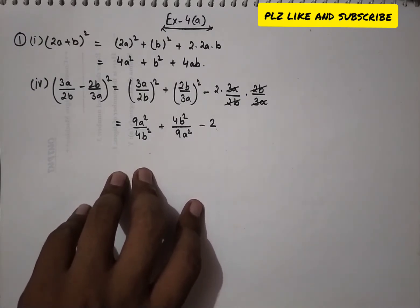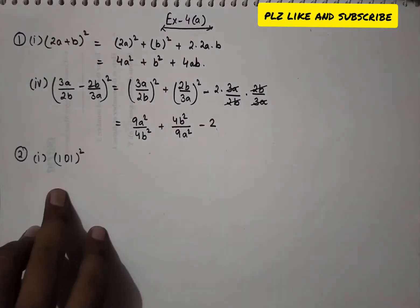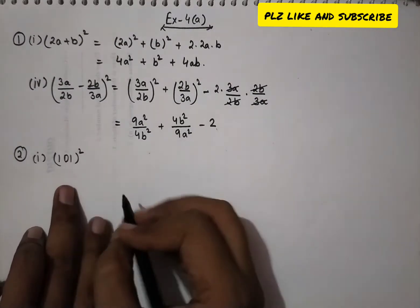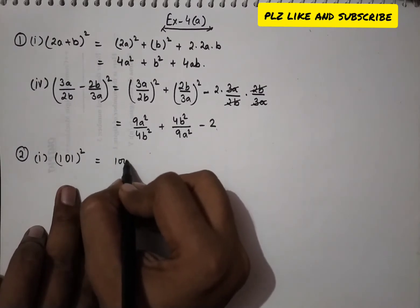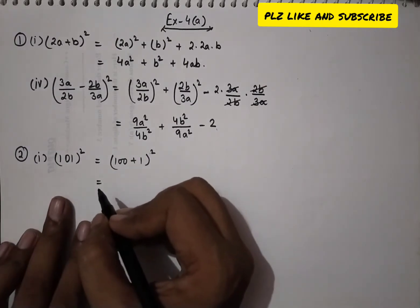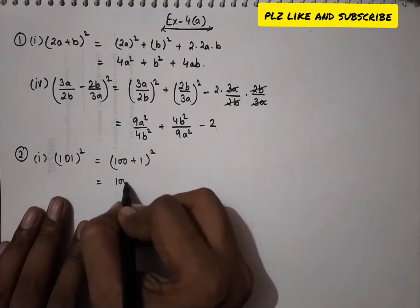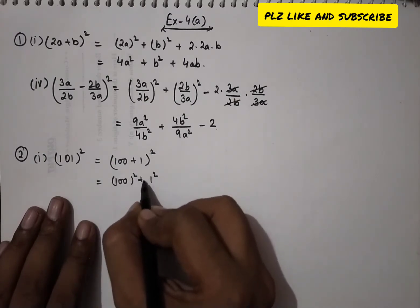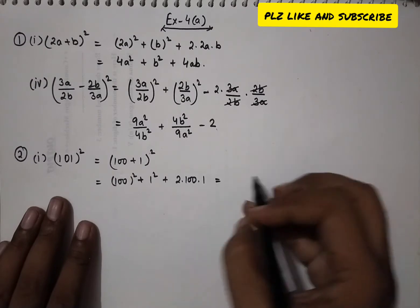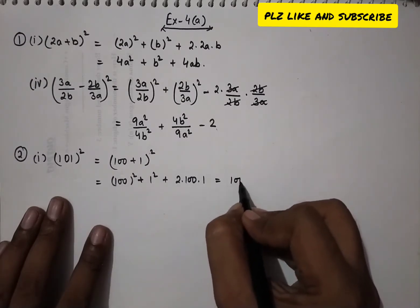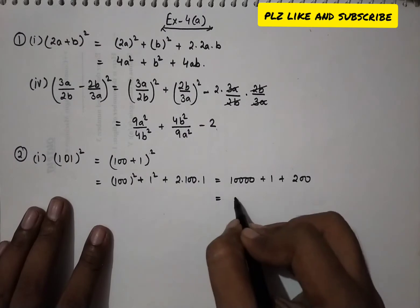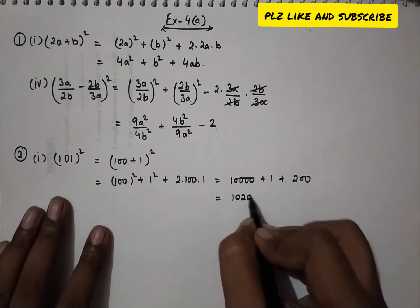In question 2, we use the identity to evaluate given numbers. The first one is 101². We write 101 as (100 + 1)² and apply the (a + b)² identity: 100² + 1² + 2 × 100 × 1 = 10,000 + 1 + 200 = 10,201.